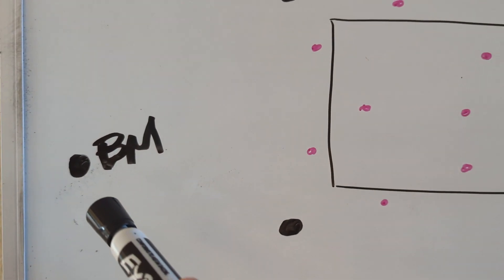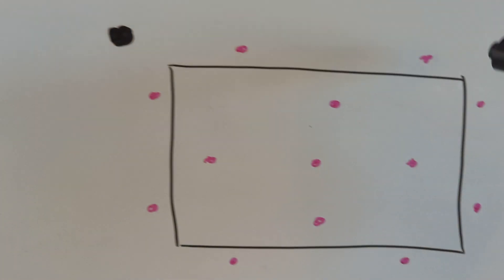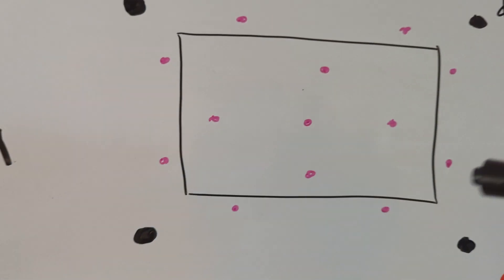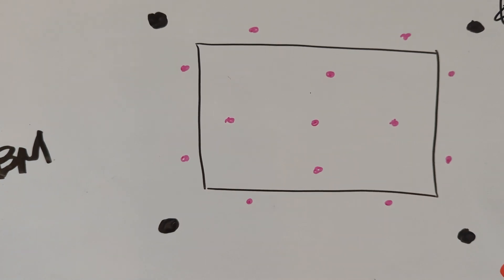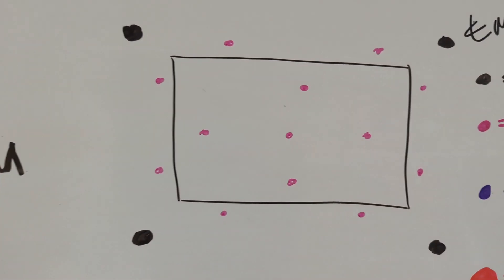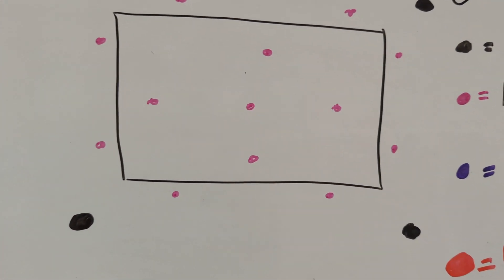So once you've done the boundary, once you've tied into a benchmark, you've done a level circuit around and everything. I like to refer to that as our original control.